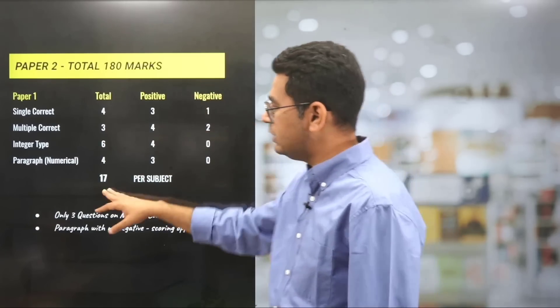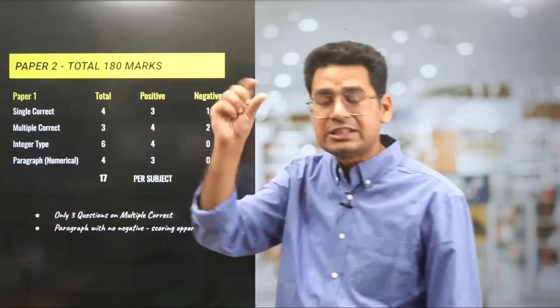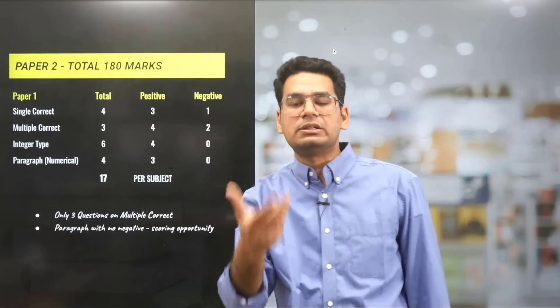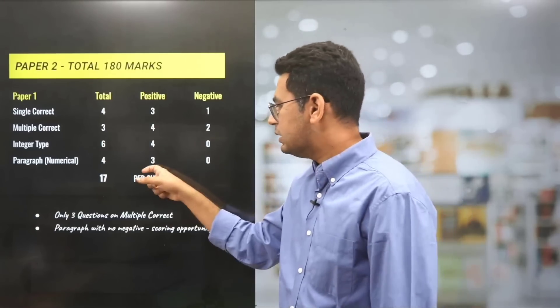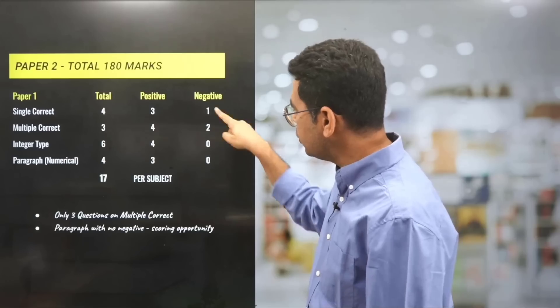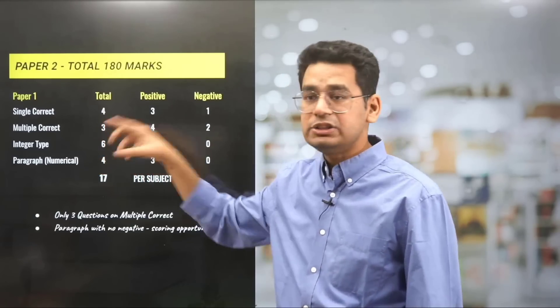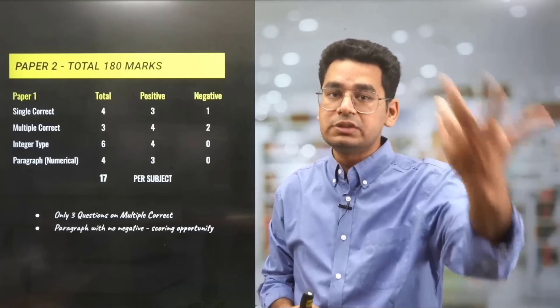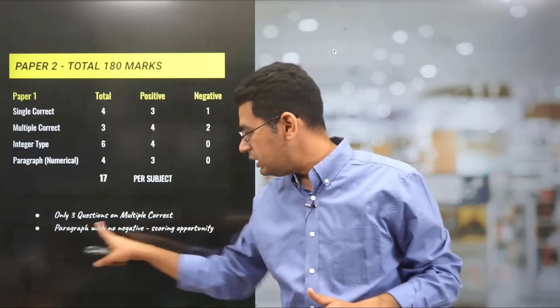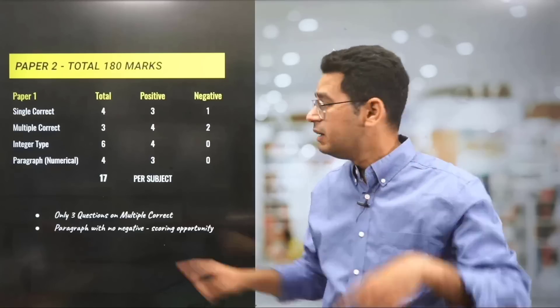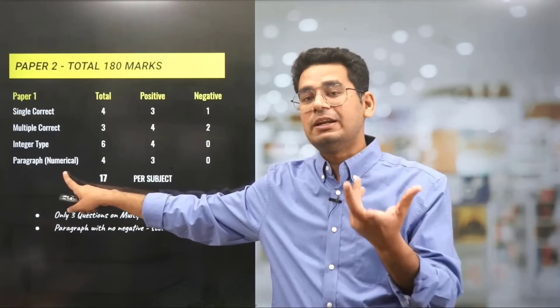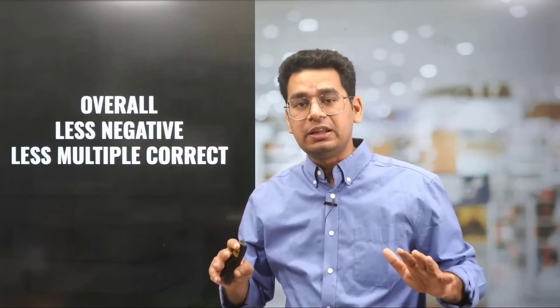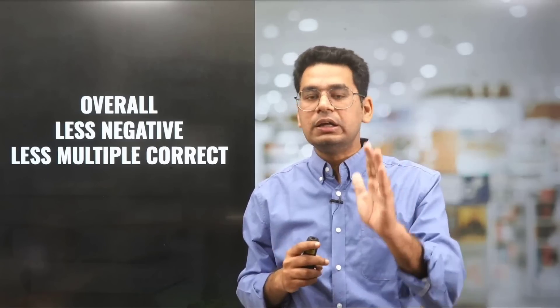Paper 2 was again 180 marks, 17 questions, but only change was matrix match replaced by paragraph-type questions with numerical-based options, not A B C D. Again no negative marking if you notice. In both papers, negative marking was only in multiple correct, and again multiple correct weightage was quite low. Believe me, this also adds up to getting more opportunities in the examination because this gives us the confidence that we can go ahead and mark anything. So only three questions of paragraph with no negative is an opportunity, whereas paragraph was difficult this time, not as easy as we thought for Paper 2.